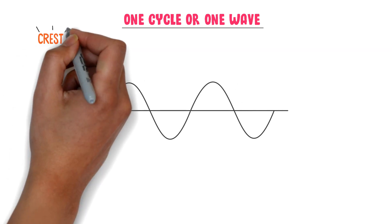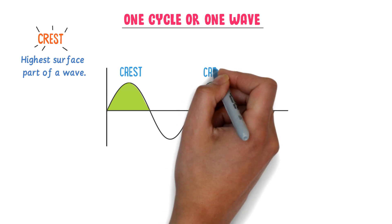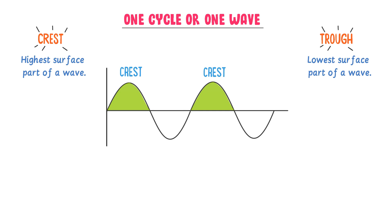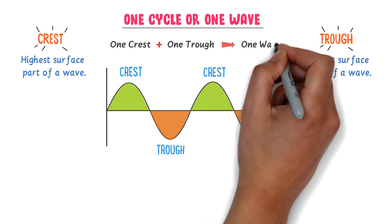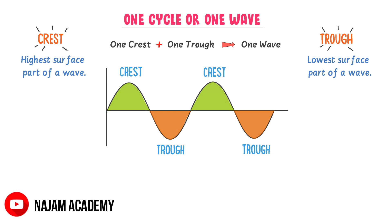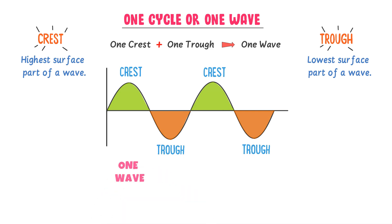We know that crust is the highest surface part of a wave. For instance, this upper part is the crust and this upper part is also the crust. While trough is the lowest surface part of a wave — this lower part is the trough and this lower part is also the trough. One crust and one trough form one wave or one cycle.